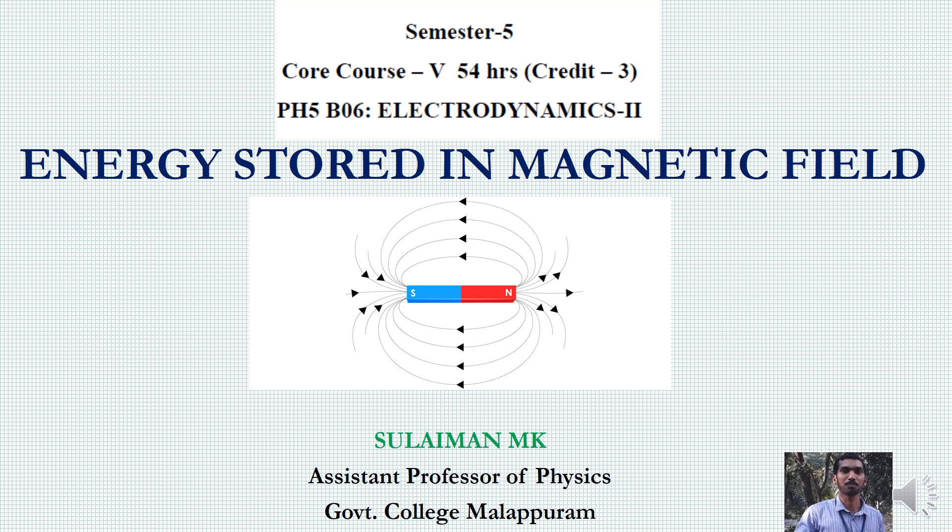The magnetic fields are generated. Current density is generated in the magnetic field. Del cross B is equal to mu zero J. Energy is stored in the magnetic field, just as electric energy is stored in the electric field.